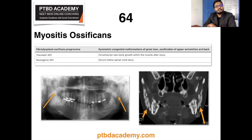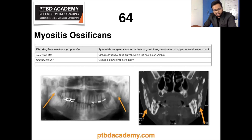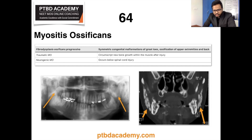Fibrodysplasia ossificans progressiva is a rare autosomal dominant disorder with a prevalence of 1 in 2 million people and onset in early childhood. Traumatic myositis ossificans, also called myositis ossificans circumscripta, is the most common form, resulting in ossification of muscle after trauma or inflammation. Radiographs and CT imaging show ossification of the masseter muscle in such cases.